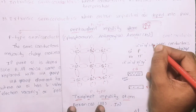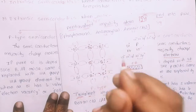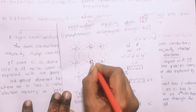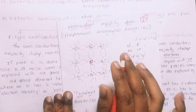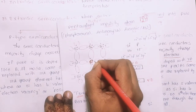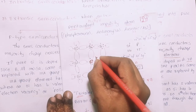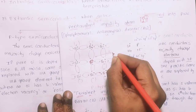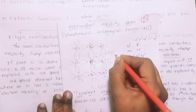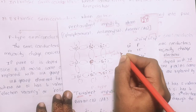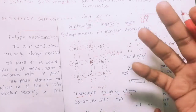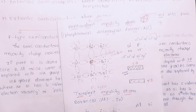With phosphorus as the impurity, there are 5 valence electrons. Four of them form covalent bonds with neighboring silicon atoms — 1, 2, 3, 4 — and the fifth electron is a free electron. This free electron increases conductivity.